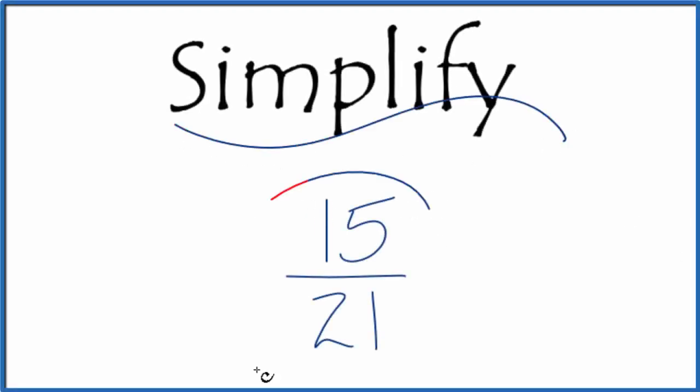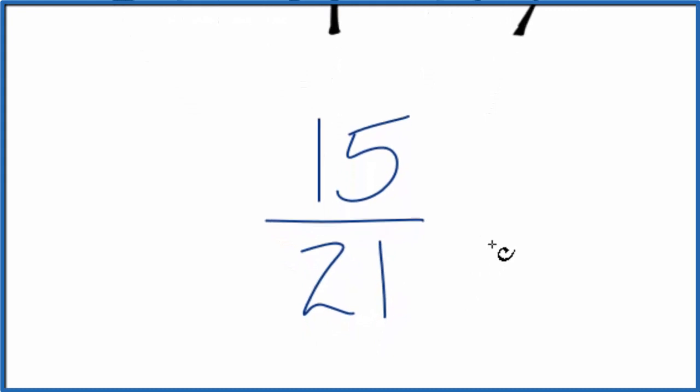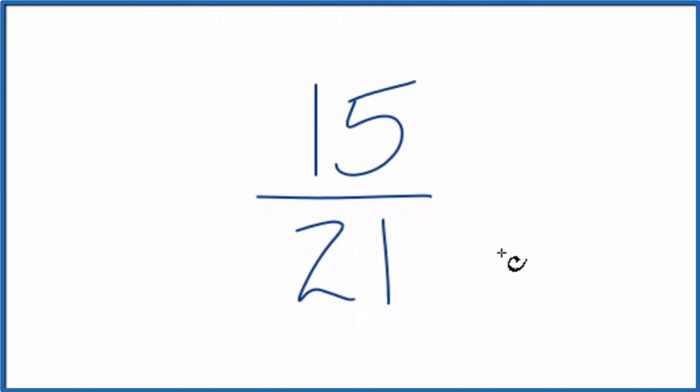If you need to simplify the fraction 15/21, here's how you do it. We have this fraction 15 over 21, and we want to find an equivalent fraction, one that has the same value except that it's in the lowest terms.